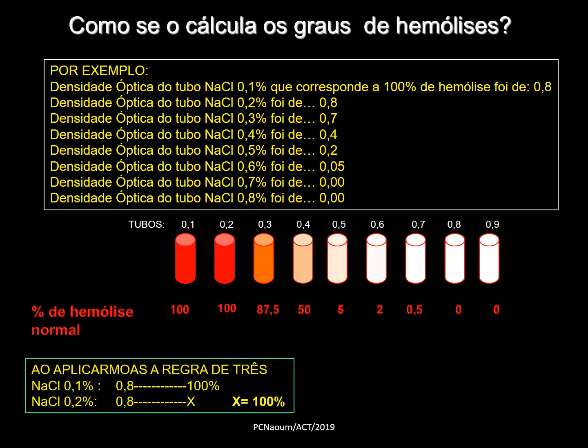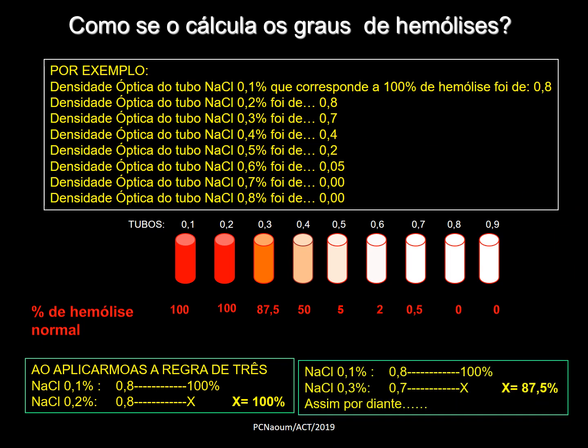Fazendo a regra de três: o 01 que deu 0,8 de densidade óptica corresponde a 100%; NaCl 0,2 também deu 0,8, então X é 100%; NaCl 0,3 deu densidade óptica de 0,7, resultando em 87,5%. Aplicando a regra de três para todos, tem-se: 100% no 0,1; 87,5% no 0,3 (0,7); 50% no 0,4 (0,4); 5% no 0,5; e assim por diante até que o 0,8 deu 0.